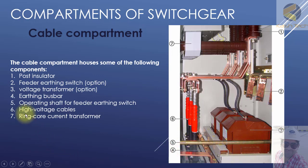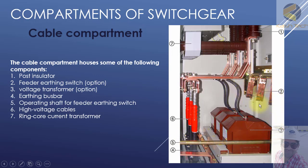Number five is the operating shaft for the feeder earthing switch. This operating shaft is used for operating the earth switch — number two — and this is the rod. If you move this rod, the earth switch will move up and as a result it will ground the feeder. Number six is the high voltage cables; you can see the cables are connected to this copper bar.